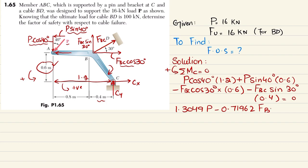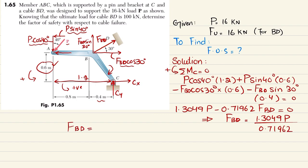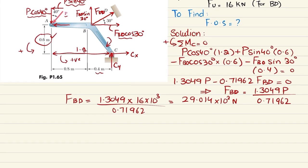Note: this force should be labeled FBD, not FBC — please correct that. So FBD equals 1.3049 times P divided by 0.71962. Substituting P equals 16 kilonewtons: FBD equals 1.3049 times 16 times 10³ divided by 0.71962, giving FBD equals 29.014 kilonewtons.